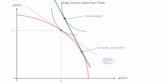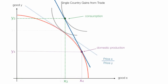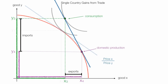The country can consume more. Consumption is shown by the green dashed lines, and the country will consume at levels X3 and Y3. The purple lines show production levels: X4 and Y4. For good X, the country consumes at X3 and produces at X4 — production is greater than consumption, so the country exports the difference. For good Y, the country consumes at Y3 and produces at Y4 — consumption is greater than production, so the country imports the difference. This, in a nutshell, is a country's exports and imports.